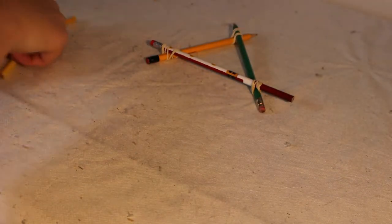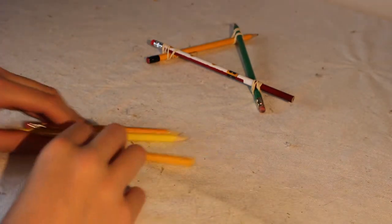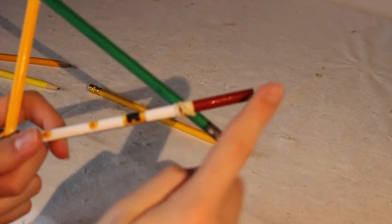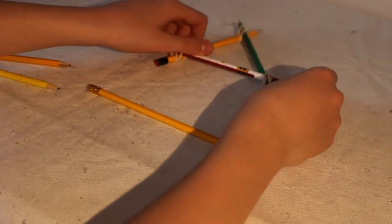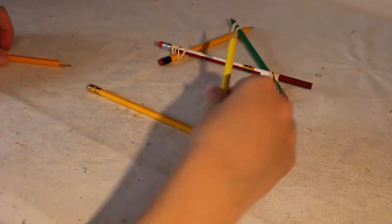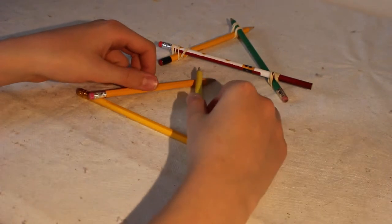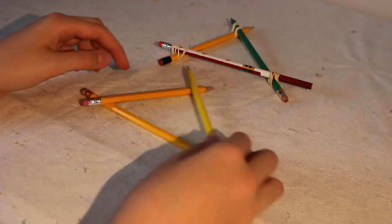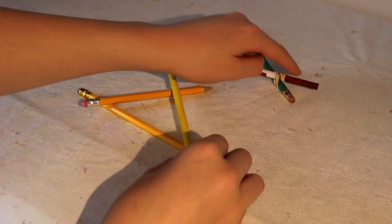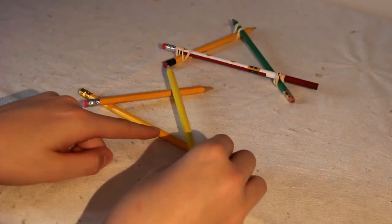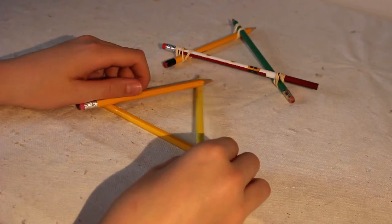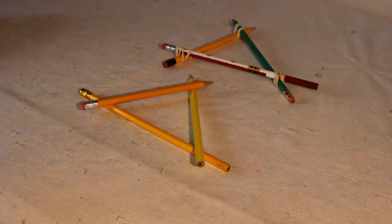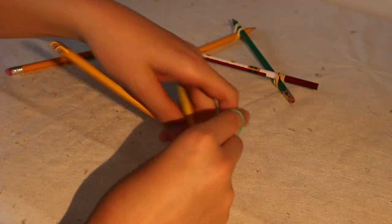So take your other three pencils and you want to make a copy of this. But with this one where the pencil goes over, you want it to go underneath on the other one. So just align it. So on this triangle this pencil is on top of both of them. So in this one it's going to go underneath both of them. And so it will look like this.